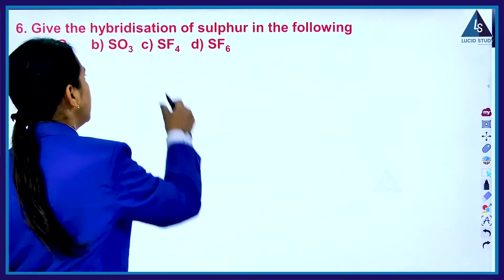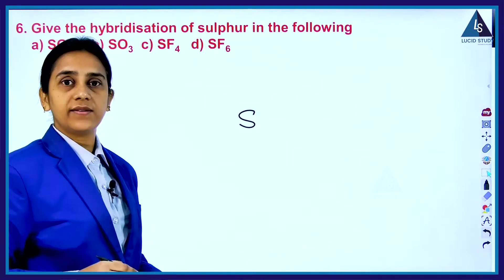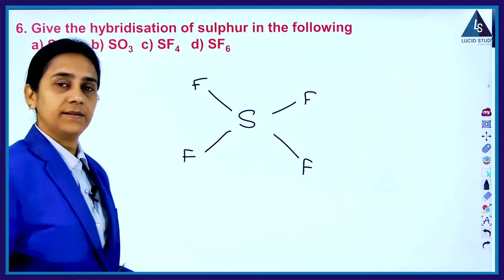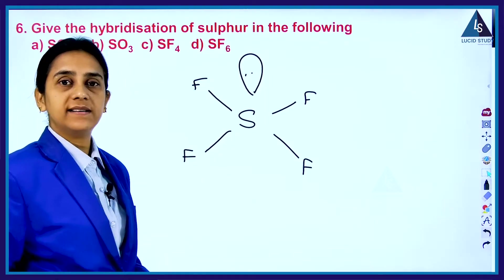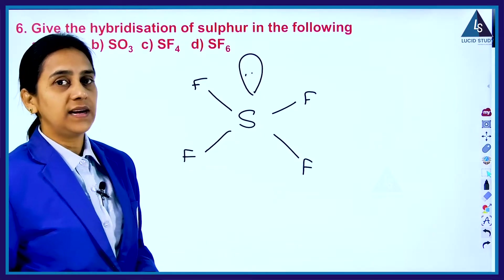The next is SF4, sulfur tetrafluoride. Sulfur is a central atom. It is bonded with four fluorine atoms and it's having a lone pair of electrons. The hybridization of the sulfur in SF4 is SP3D hybridization.